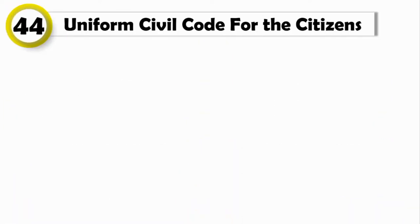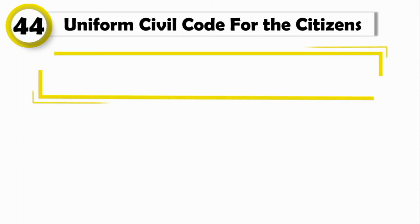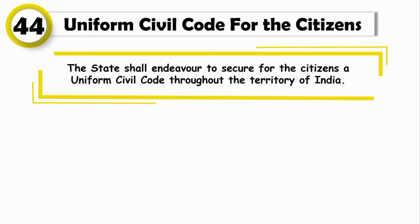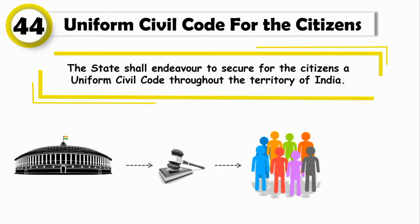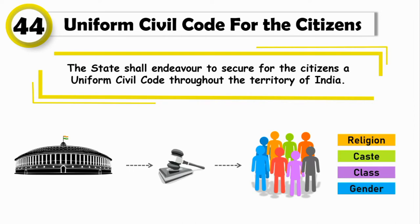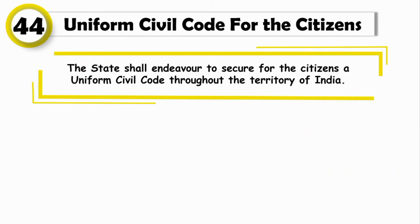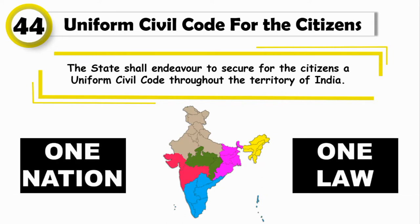Article 44 talks about Uniform Civil Code for the Citizens. It says the state shall endeavor to secure for the citizens a uniform civil code throughout the territory of India. This means it is the duty of the state to secure and implement a uniform, that is, common civil law for all its citizens, irrespective of their religion, caste, class, gender, etc. In short, it talks about one nation, one law. That's what Uniform Civil Code is.